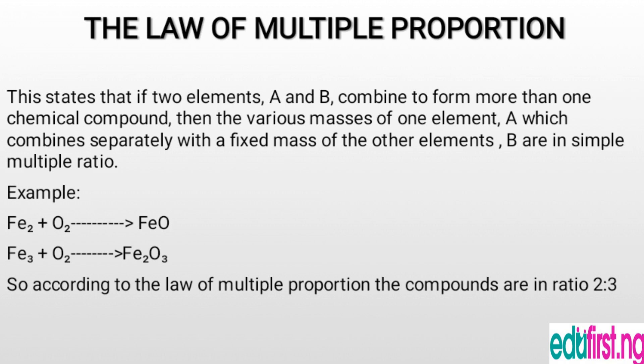For example, iron(II) reacts with oxygen to form iron(II) oxide, and iron(III) reacts with oxygen to form iron(III) oxide. According to the law of multiple proportions, the compounds are in a ratio of 2 to 3. Note that both are reacting with a fixed mass of oxygen — one molecule of oxygen — so the ratio is 2 to 3.